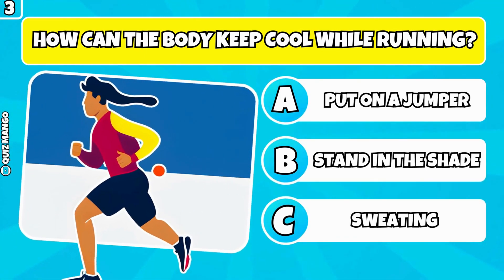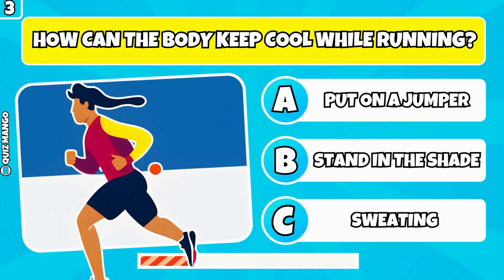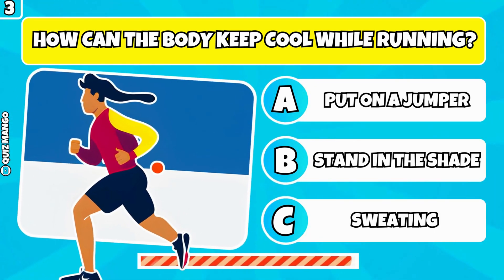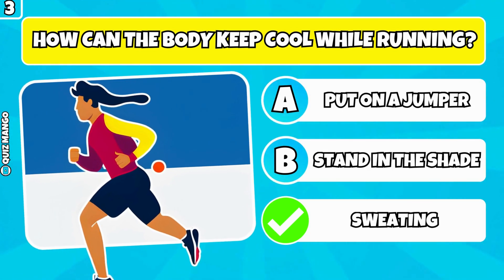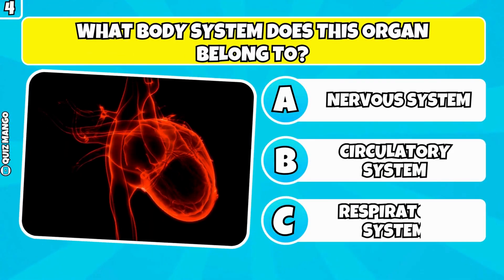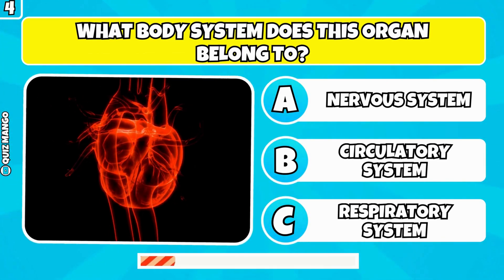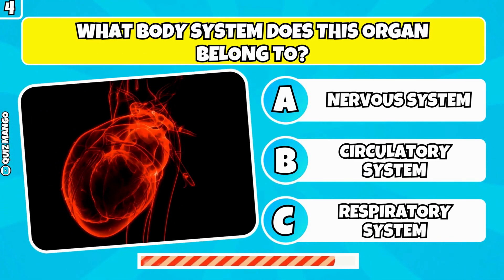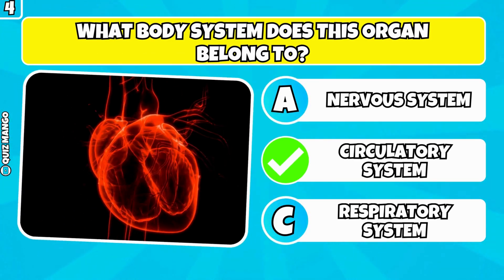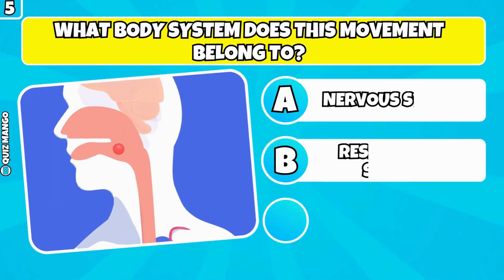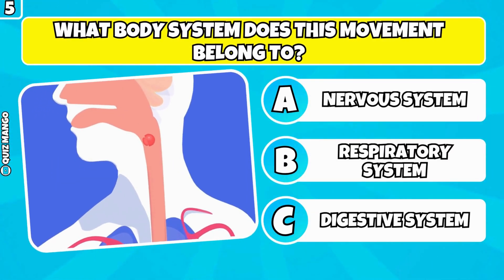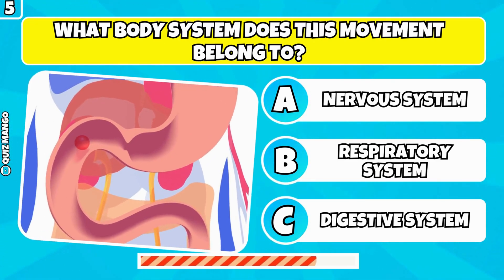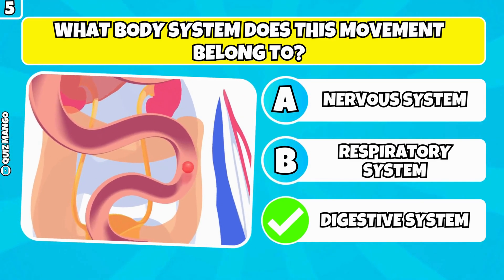How can the body keep cool while running? By sweating. What body system does this organ belong to? It's from the circulatory system. What body system does this movement belong to? It's from the digestive system.